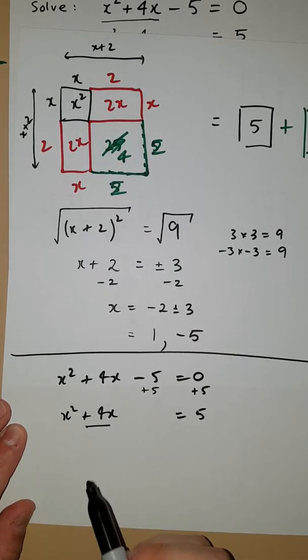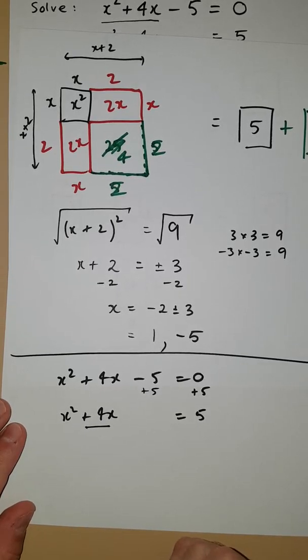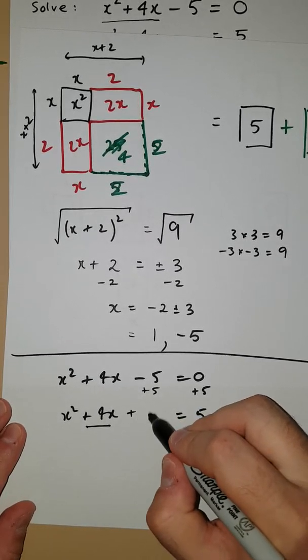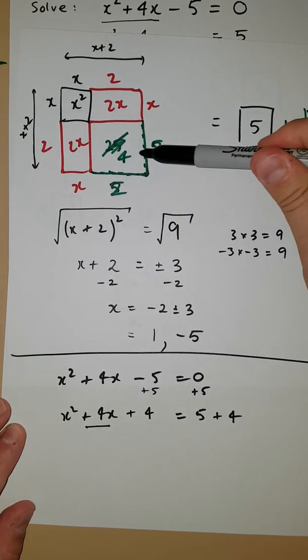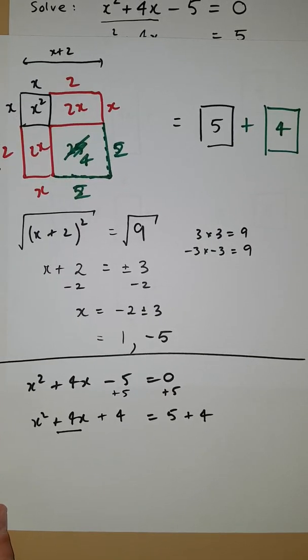We look to the coefficient of x, and we halve it and square it. Half of 4 is 2, the square of that is 4. We add that to both sides. That's kind of doing what we did up here with the green squares.